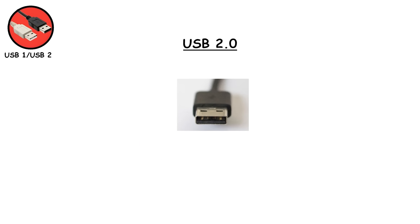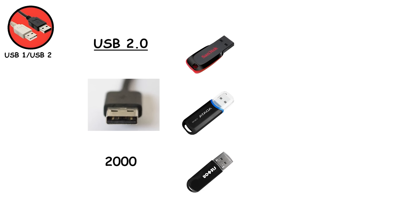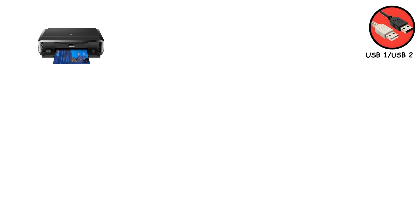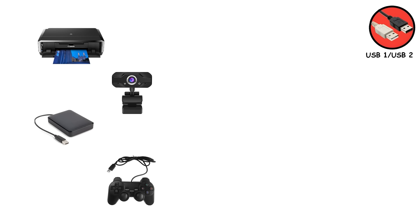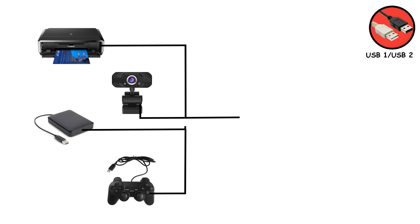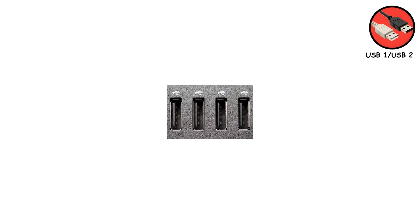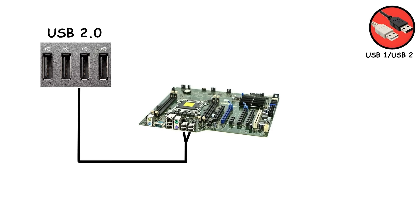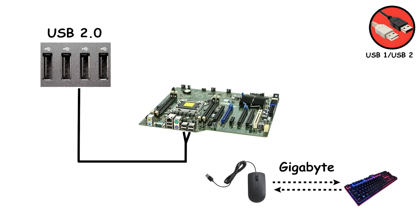Then USB 2.0 arrived in 2000 and suddenly everything got easier. Flash drives exploded in popularity — people wore them on lanyards like badges of honor. Loading up an MP3 player with your carefully curated LimeWire playlist took minutes instead of entire evenings. Printers, webcams, external hard drives, even those old plug-in game controllers all ran on USB 2.0's black ports, which quickly became the standard everywhere. Even in 2025, motherboards ship with a couple of USB 2.0 ports because your mouse and keyboard don't need gigabit speeds to function.